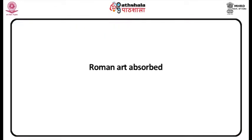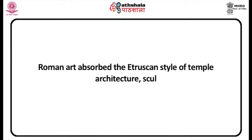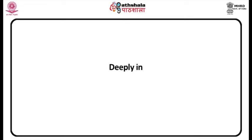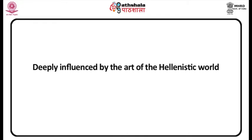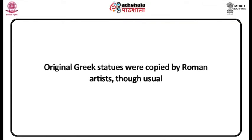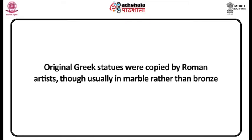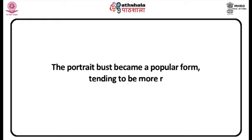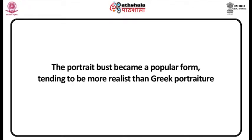Let us look at some features of Roman art. Many characteristics of Roman art have their origins in the art of the Etruscans, the Romans' predecessor as the dominant culture of Italy. Roman art absorbed the Etruscan style of temple architecture, sculpture, portraiture, and wall painting. Rome was also deeply influenced by the art of the Hellenistic world, which had spread to southern Italy and Sicily through the Greek colonies there. Original Greek statues were copied by Roman artists, though usually in marble rather than bronze, and removed from their original context.